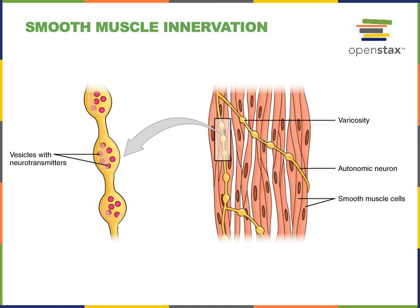The innervation of smooth muscle is by autonomic efferent fibers, in contrast to skeletal muscle which is innervated by somatic efferent fibers. The autonomic efferent fibers have bulbous swellings called varicosities where neurotransmitters are released. These varicosities are swellings all along the length of the axon, in contrast to axon terminals that are found only at the end of the axon.